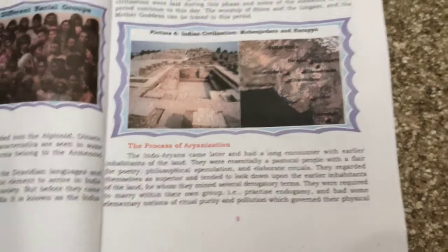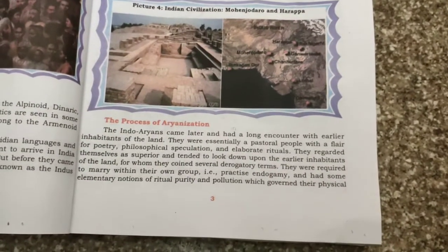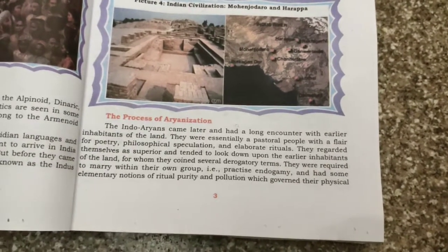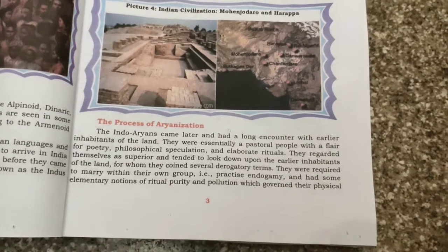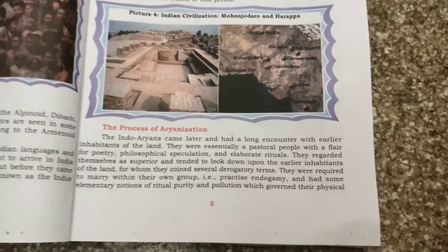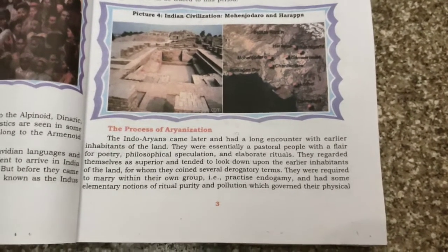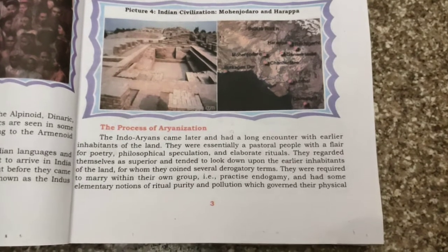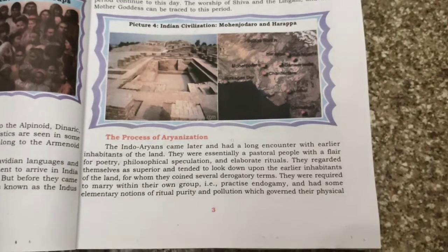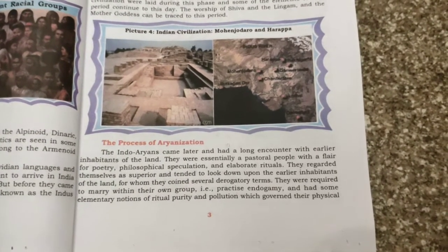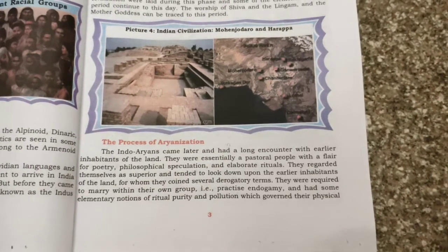Moving on to the process of Aryanization — the Indo-Aryans came later and had a long encounter with the earlier inhabitants of the land. They were essentially a pastoral people with a flair for poetry, philosophical speculation and elaborate ritual. They regarded themselves as superior and tended to look down upon the earlier inhabitants. They were required to marry within their group — that is the practice of endogamy.